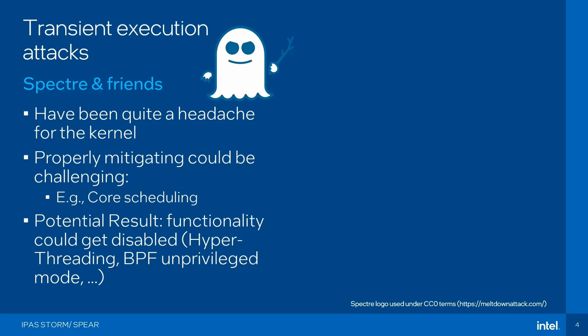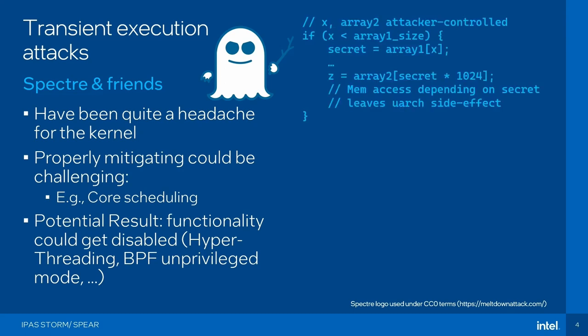A big part of core scheduling would be to protect the kernel, so you can have two co-located threads — one running in user space and one in kernel space — and then leak stuff across threads. This part of core scheduling hasn't been upstreamed yet, because the performance costs are really high and it's really tricky to get right. As a result, different vendors have simply opted to disable functionality — some BSDs disabled hyper-threading altogether, and most Linux distros have disabled unprivileged BPF code after Spectre BHB was made public.